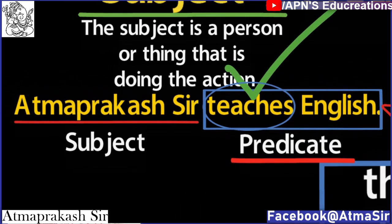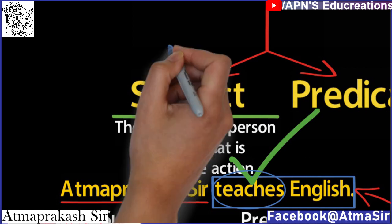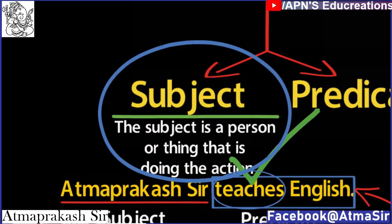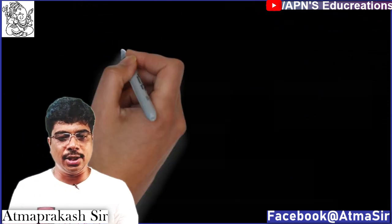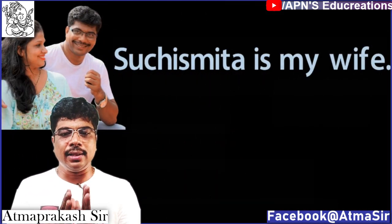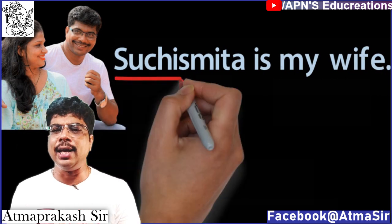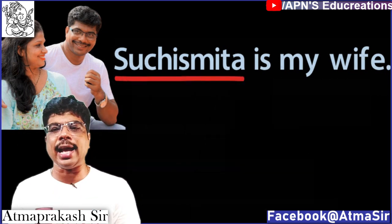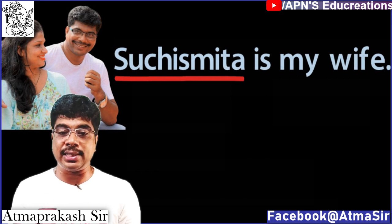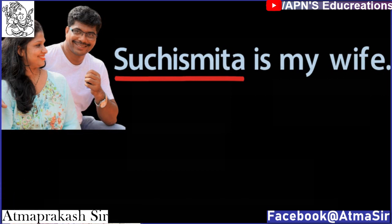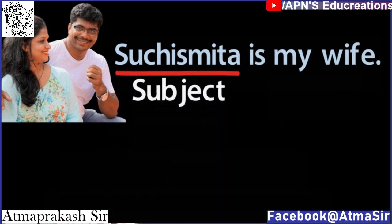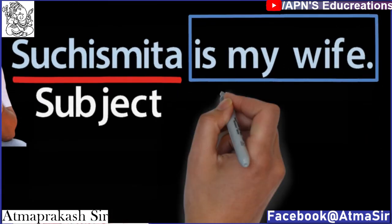Sometimes in a sentence, the subject may not be doing any action but is the focus of the sentence. For example, in 'Suchismita is my wife,' the person Suchismita is not doing any action but she is the focus of the sentence. Hence, in this example, Suchismita is the subject and the rest of the sentence is the predicate.